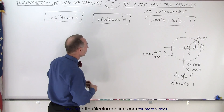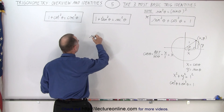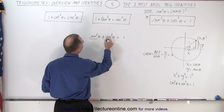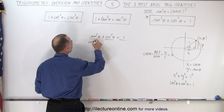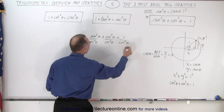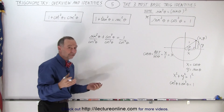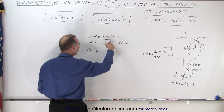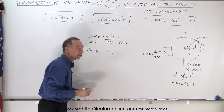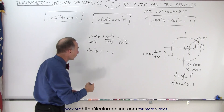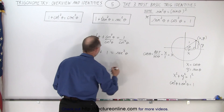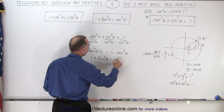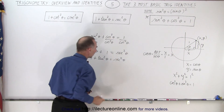Now how do you get the other two identities? We start with the basic one: sine squared of theta plus cosine squared of theta equals 1, and now we're going to divide both sides of the equation by cosine squared of theta. Sine divided by cosine is by definition equal to the tangent, so this becomes tangent squared of theta plus 1. And 1 over cosine squared is equal to secant squared, so you get 1 plus tangent squared of theta equals secant squared of theta — and that's exactly that identity right there.